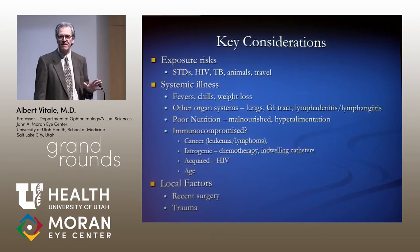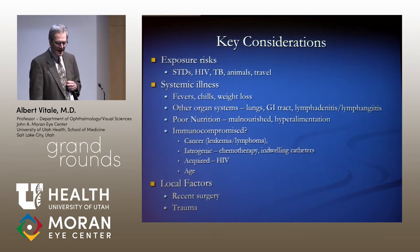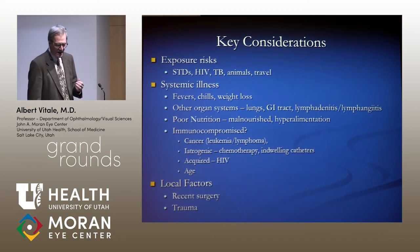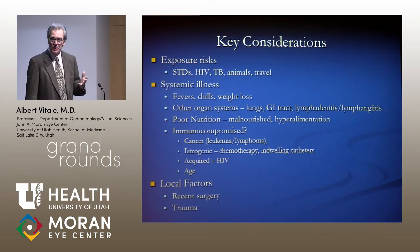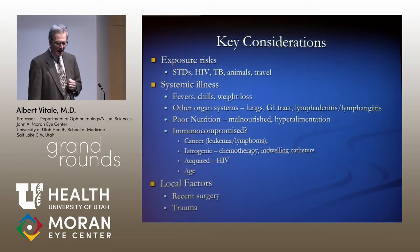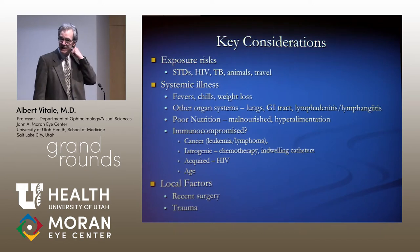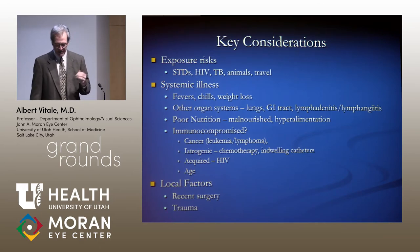There are certain key considerations: exposure risks such as sexually transmitted diseases, HIV status, tuberculosis exposures, systemic illnesses, constitutional symptoms, other organ system involvement, nutritional status, and immune status — whether acquired, iatrogenic, or age-related, since immune status wanes as we age — as well as local factors including recent surgery and trauma.